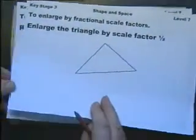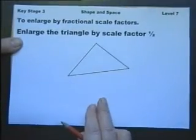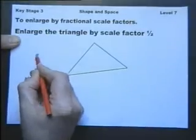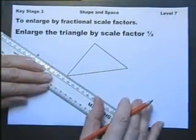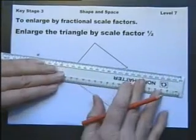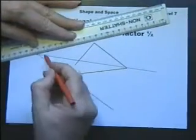Now let's do an enlargement of any shape with a centre of enlargement anywhere you like. So let's put our centre of enlargement there, and we proceed the same way as with the rotation. We draw lines through each of the vertices of the shape that we're going to enlarge.